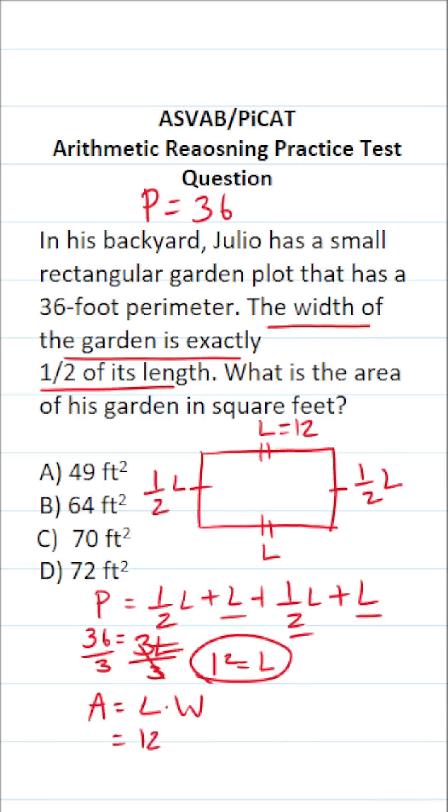We can go ahead and plug that into the area formula now. What is its width? Well, right here is the width of this rectangular garden. We know width is equal to one-half its length, and we know its length is now 12. So this is one-half times 12. One-half of 12 is 6.